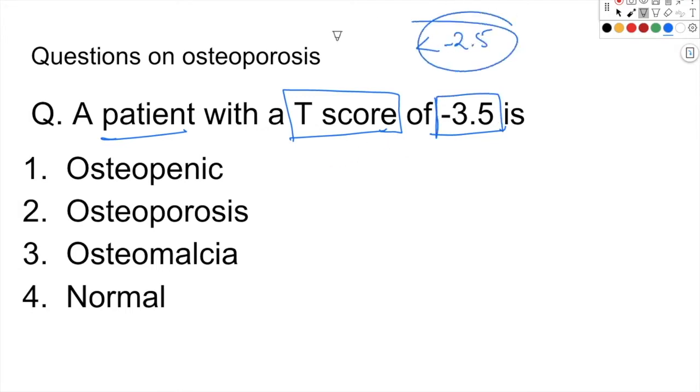Is it osteopenic? No. Is it osteoporosis? Yes, because osteopenic means it is from minus 1 to minus 2.5.